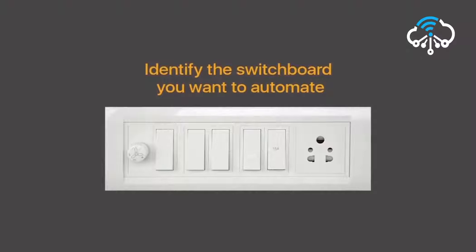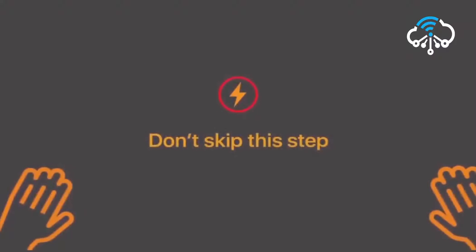Now identify the switchboard you want to automate with the Node Switch. Also make sure that you have a neutral wire inside the switchboard. A neutral connection is mandatory for the HD module. In the absence of the neutral wire, please draw a neutral wire from the nearest point. Otherwise, the installation cannot be completed.